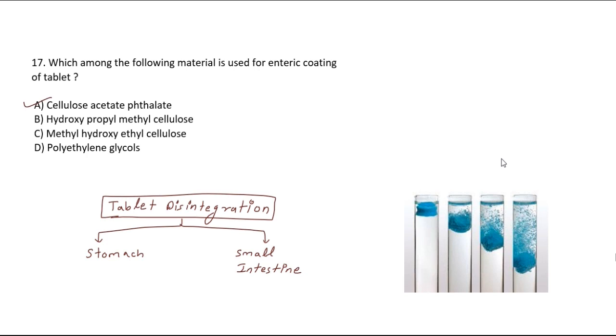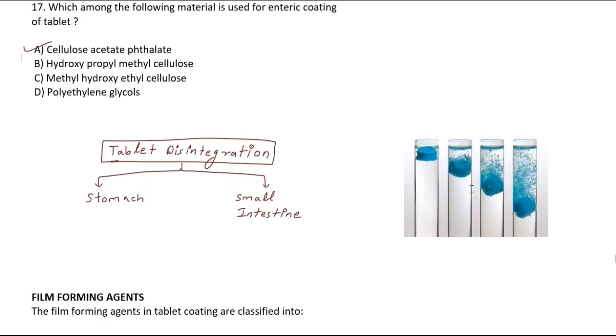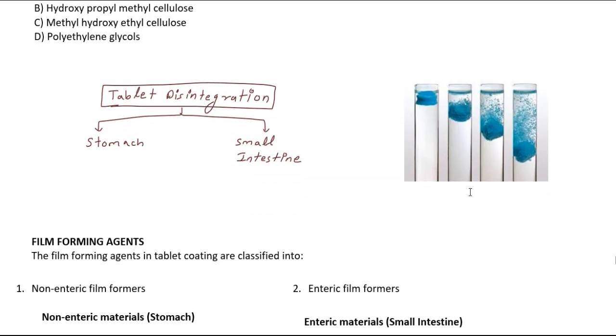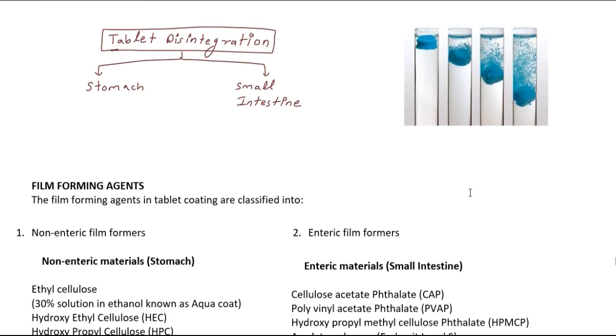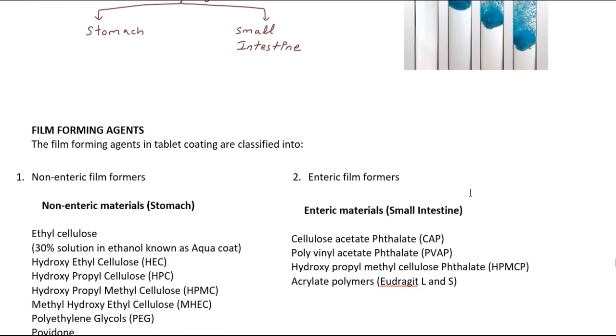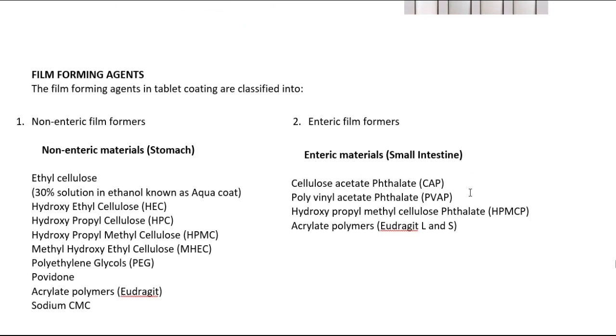Enteric coating materials are used as film forming agents. Film forming agents are classified as non-enteric materials and enteric materials. Non-enteric film formers disintegrate in the stomach at acidic pH.